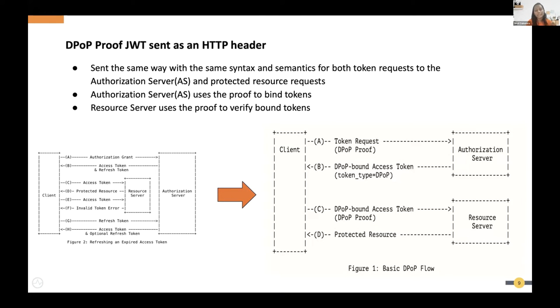How does DPoP work? DPoP is a JWT that is additionally sent as a header parameter alongside the standard request-response flow. The client generates this DPoP JWT and sends it in the token request as a header. The authorization server then performs extra validations — it verifies the client using the public key included in the DPoP.